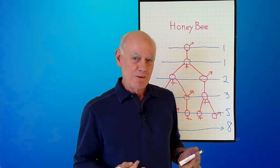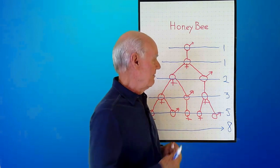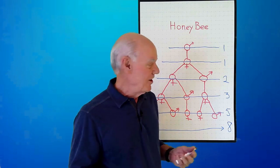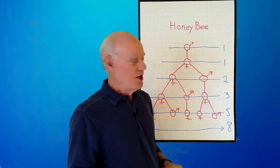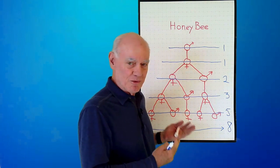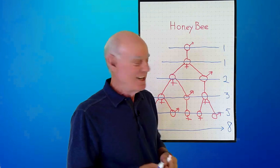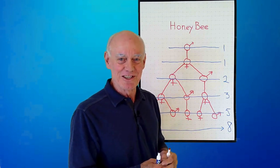We see that the Fibonacci sequence, which is mathematics, shows us a pattern in the family tree of a male honeybee — something that we see in the real world — and also allows us to say something about what's going to happen next. It organizes something in the real world and allows us to make predictions about what comes next. This is one of my favorite applications of the Fibonacci sequence. Now we see that mathematics can be used to describe and make predictions about the world around us.